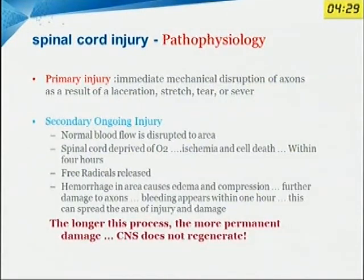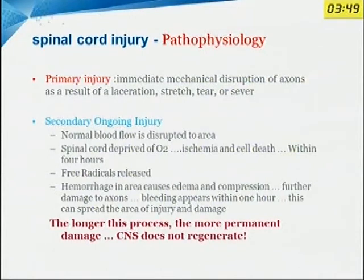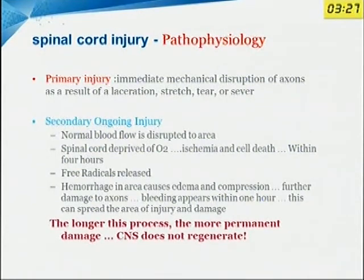Regarding the pathophysiology of spinal cord injury, we can divide it into primary injury and secondary or ongoing injury. Primary injury is the immediate disruption of axons, resulting in lacerations or tears. Once this happens, secondary injury begins due to disruption of normal blood flow, leading to ischemia and cell death within four hours. This results in release of free radicals, which increase edema, compression, and hemorrhage, further causing spinal cord ischemia and cell death — a vicious cycle. The longer this process, the more permanent the damage, because the CNS does not regenerate.